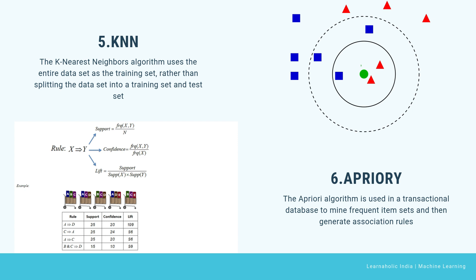Now we will see the unsupervised learning algorithms. The Apriori algorithm is used in a transactional database to mine frequent item sets and generate association rules. It is popularly used in market basket analysis, where one checks for combinations of products that frequently co-occur in the database. In general, we write the association rule as: if a person purchases item x, then they purchase item y, expressed as x → y.